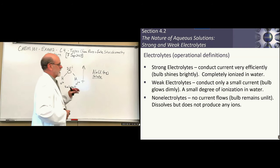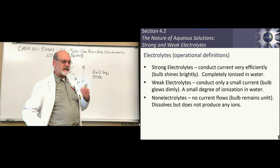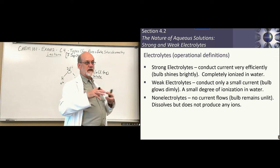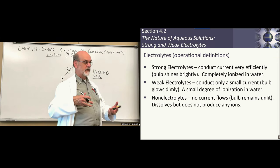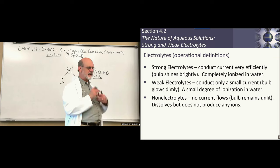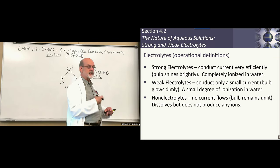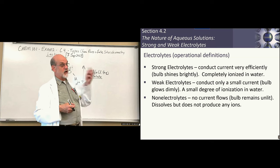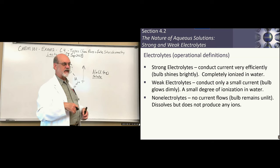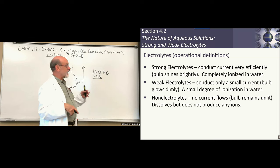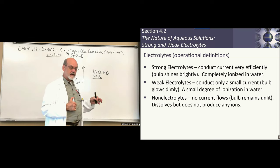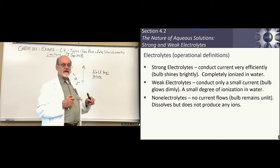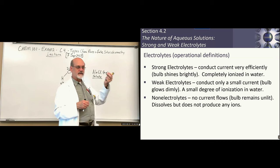We distinguish between strong electrolytes and weak electrolytes. Strong electrolytes are compounds that completely dissociate into their ionic components. Sodium chloride is a good example — it completely dissociates, so it conducts electricity very efficiently. If you connect a circuit through a battery with a light bulb, the bulb will be bright, indicating maximum current flow.